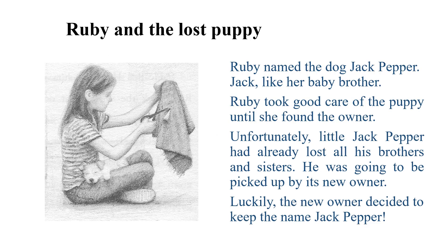Ruby and the lost puppy: Ruby named the dog Jack Pepper. Jack liked her baby brother. Ruby took good care of the puppy until she found the owner. Unfortunately, little Jack Pepper had already lost all his brothers and sisters. He was going to be picked up by his new owner. Luckily, the new owner decided to keep the name Jack Pepper.